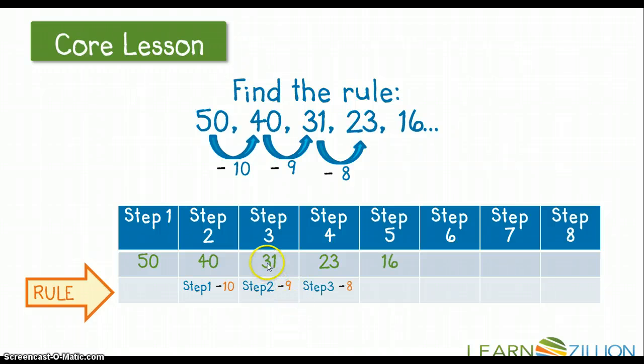Now, I'm going to see if I subtract 8, if that works for my numbers that I have. So 31, my step 3 number, minus 8, is in fact 23. So I'm looking at my numbers here, 10, 9, 8, hmm, what comes next? Well, I'm going to try subtracting 7, see if that works. So 23 minus 7 is indeed 16.